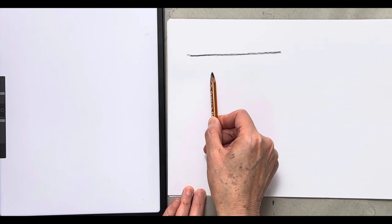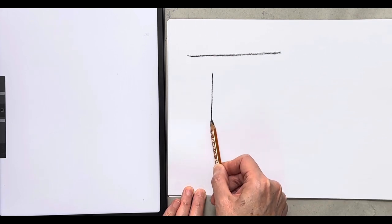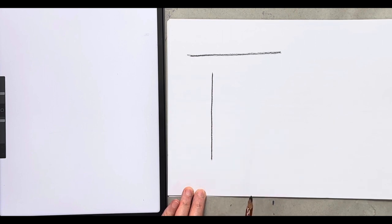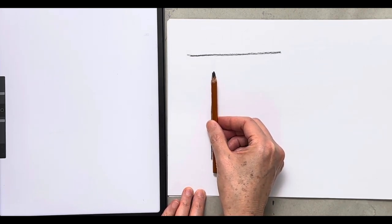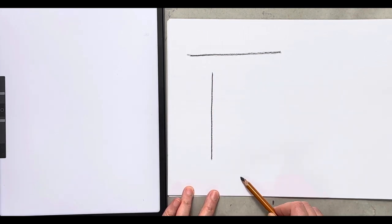Vertical lines. We associate vertical lines with the direction of gravity, going up or down. Vertical lines create a sense of strength, such as tree, human standing up.